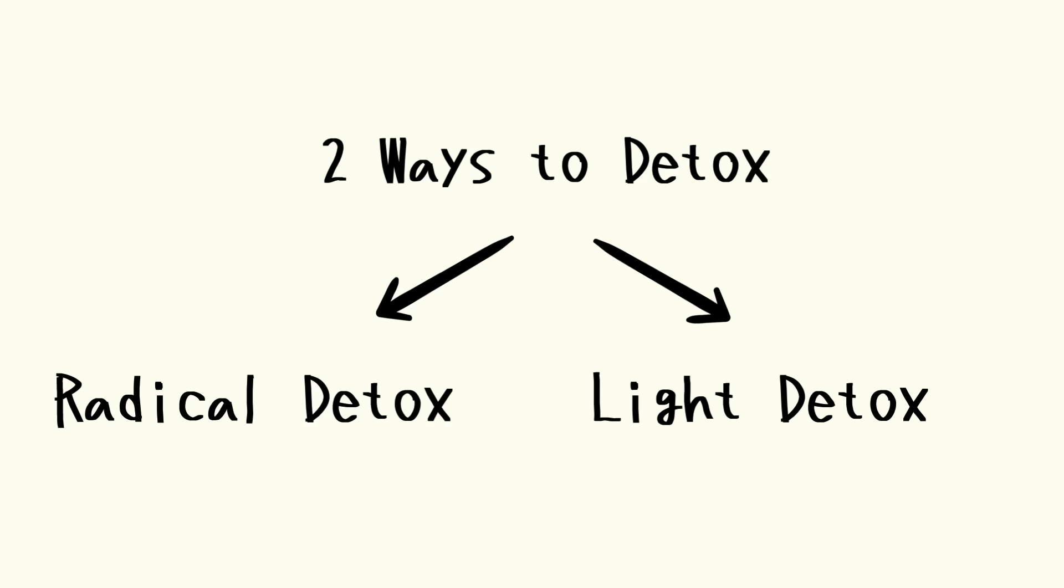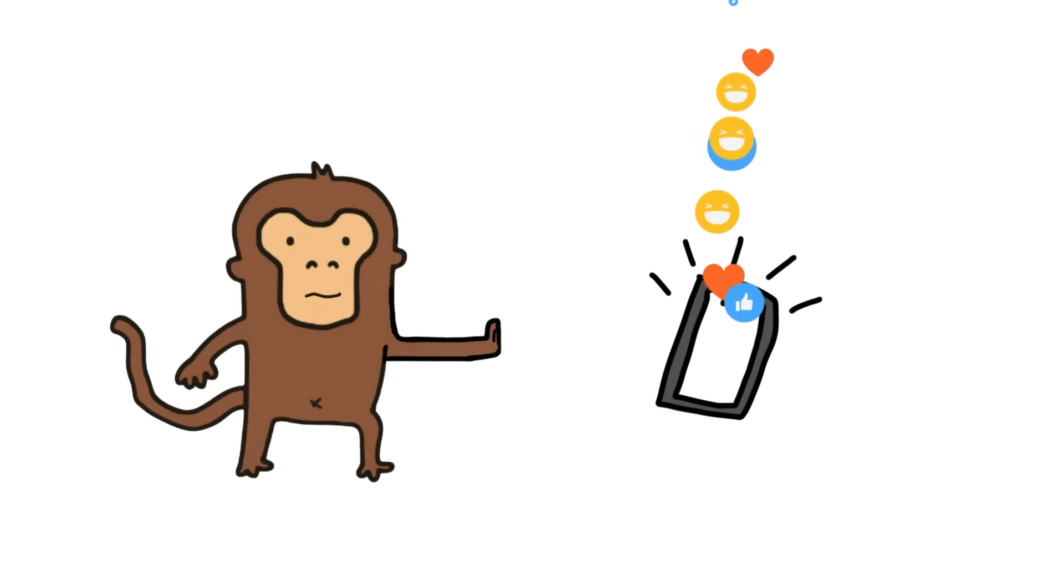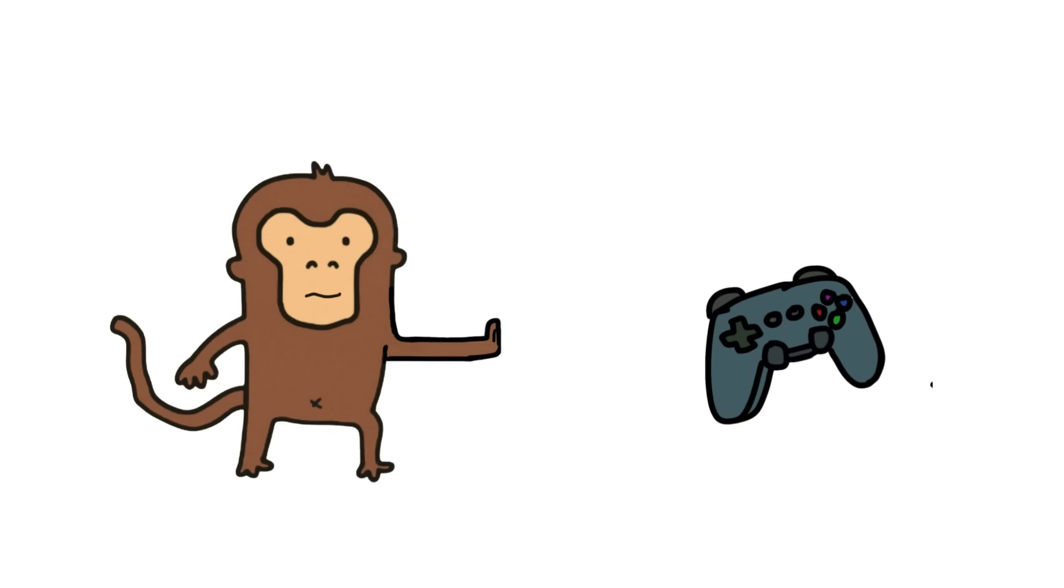Number two: Light detox. Once a week, Monkey avoids one high dopamine behavior. Maybe no social media on Sundays. Maybe no video games on Wednesdays. It's like a mini-reset.